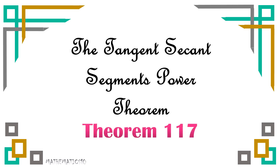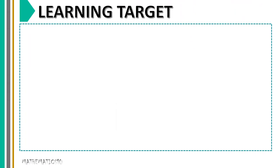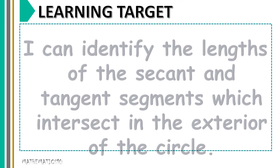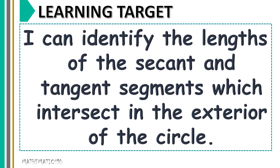This is our theorem 117. Of course, let us have our learning target for this video. I can identify the lengths of the secant and tangent segments which intersect in the exterior of the circle.